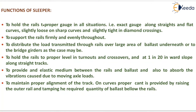Functions of sleepers: to hold the rails to proper gauge in all situations — exact gauge along straight and flat curves, slightly loose on sharp curves, and slightly tight in diamond crossings. To support the rails firmly and evenly throughout. To distribute the load transmitted through rails over a large area of ballast underneath, or to the bridge girders. To hold rails to proper level in turnouts and crossovers and at 1 in 20 inward slope along straight tracks. To provide an elastic medium between rails and ballast and absorb vibrations caused by moving axle loads. To maintain proper alignment on curves where proper cant is provided by raising the outer rail and tamping the required quantity of ballast.